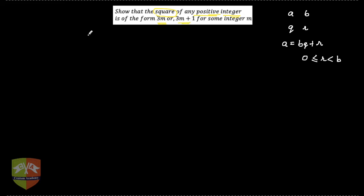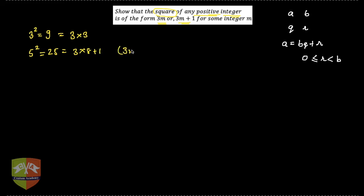Let's take some examples first. If you take 3 and square it, 3² is 9, which is of the form 3m where m is 3. Take a random number like 5: 5² is 25, which is 3×8 plus 1 — that's of the form 3m plus 1. Another example: 12² is 144, which is a multiple of 3 (3×48). So either it is of the form 3m or 3m plus 1, but is this true for all numbers?